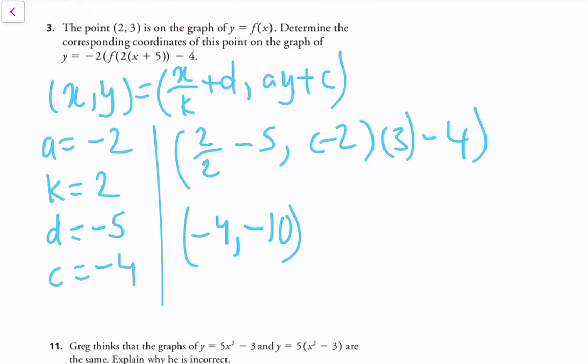The point (2, 3) is on the graph of y equals f of x. We need to determine the corresponding coordinates on the graph of y equals negative 2 times f of 2 times x plus 5, minus 4. Using the formula (x over k plus d, ay plus c), we extract the values: a equals negative 2, k equals 2, d equals negative 5, and c equals negative 4. Plugging through the formula, we get the final point: (negative 4, negative 10).